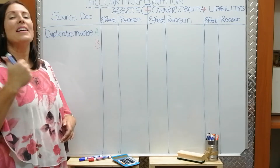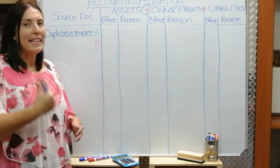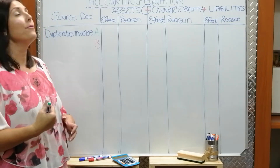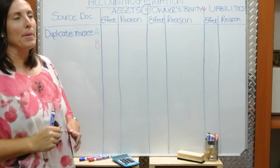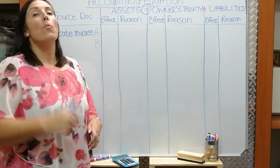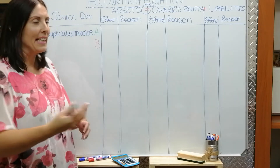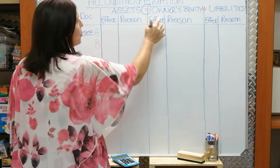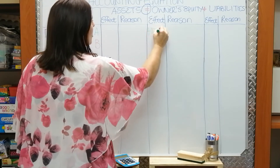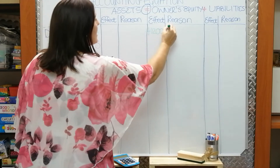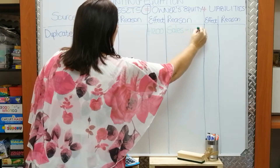So you ask yourself: sales is what type of account? It's an income. What do all income accounts do? They affect the owner's equity. So I move to my owner's equity element of the accounting equation. What does an income always do to the owner's equity? It increases the owner's equity. So I will go to owner's equity, and under the effect I will write 1,200, and my reason is that sales is an income.